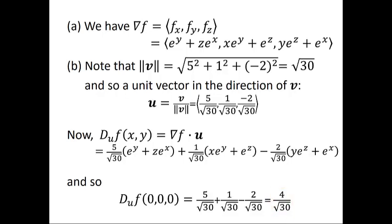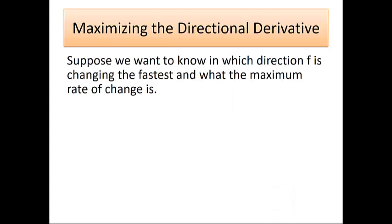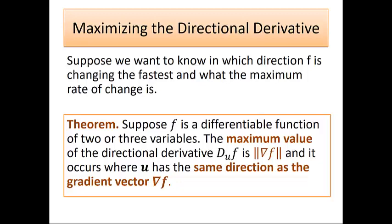New question: suppose we want to know in which direction f changes fastest and what that maximum rate of change is. The answer is the following theorem: if f is a differentiable function of two or three variables, the maximum value of the directional derivative is the length of the gradient, and it occurs when u has the same direction as the gradient vector.